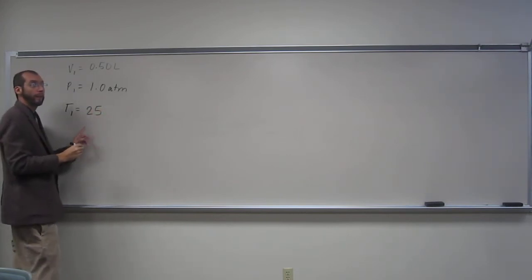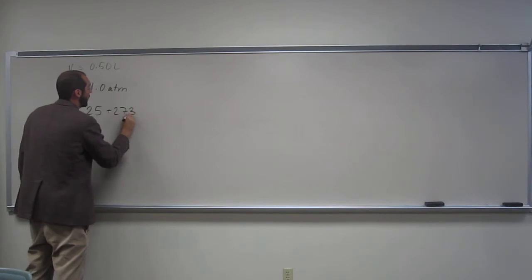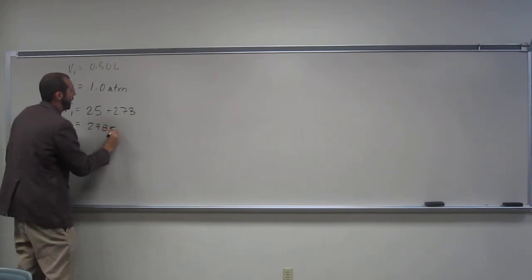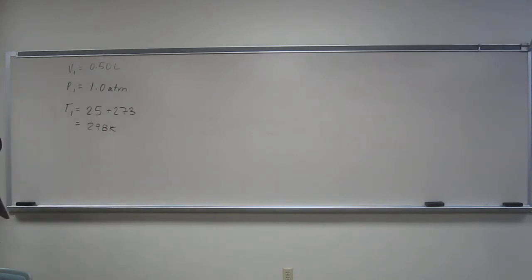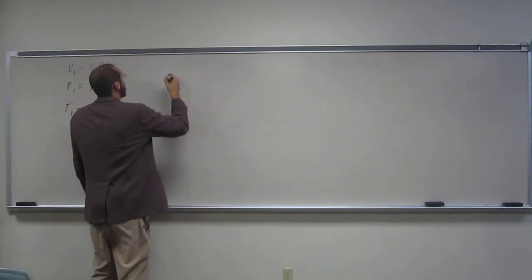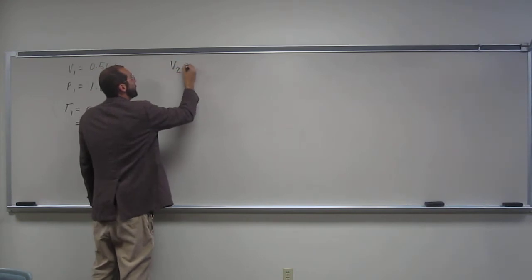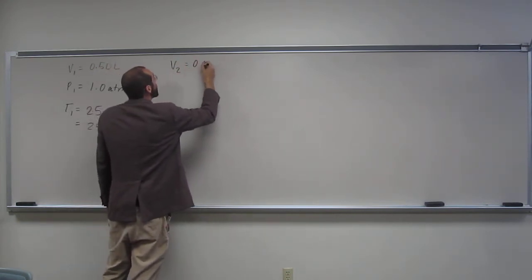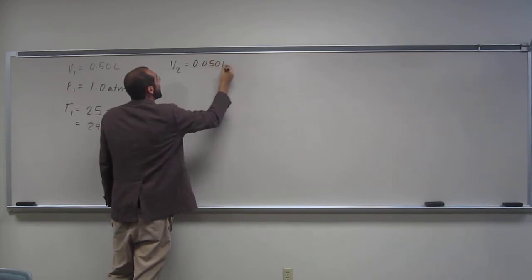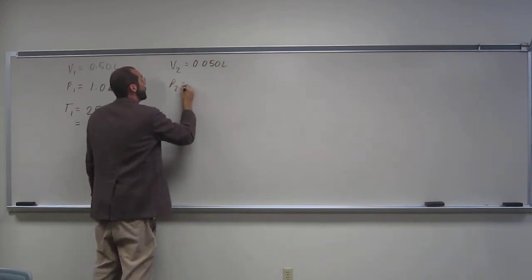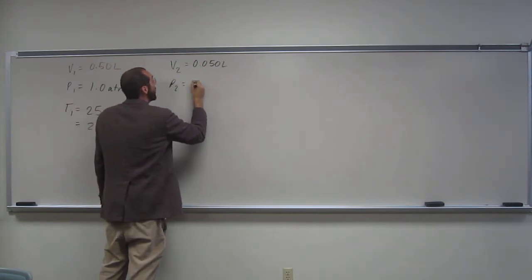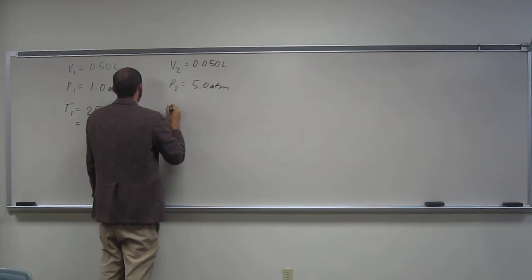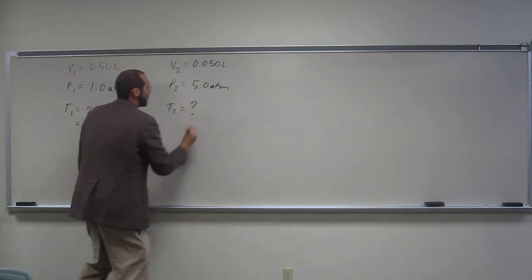So we've got to convert that to Kelvin. Okay. And then it gives us V2, 0.050 liters. P2 is 5.0 ATM. And T2 is what we're looking for.